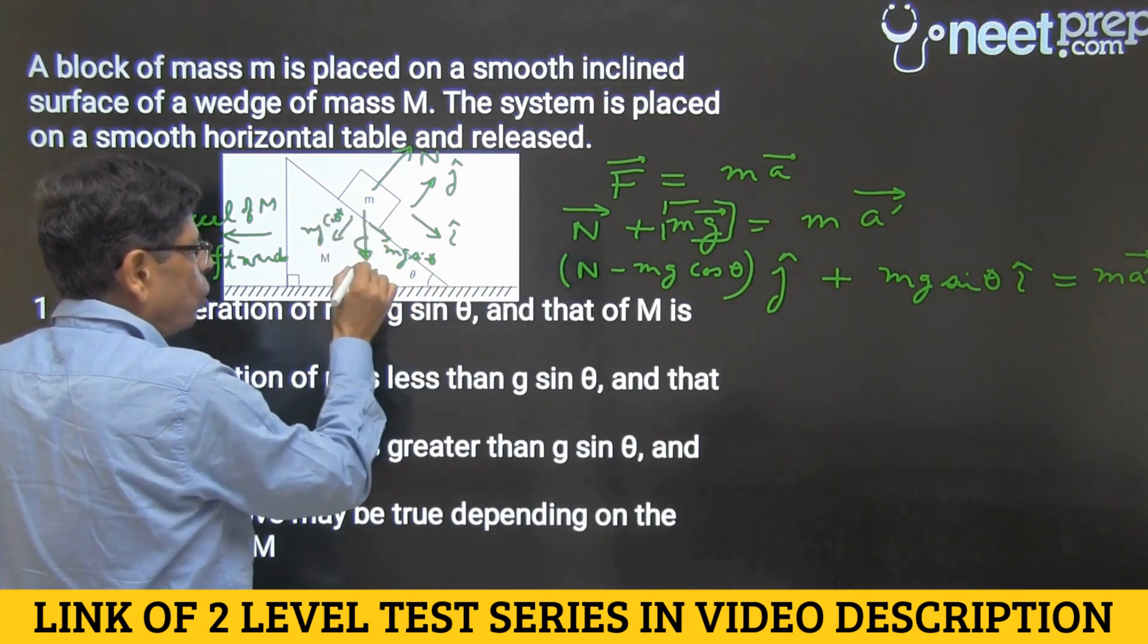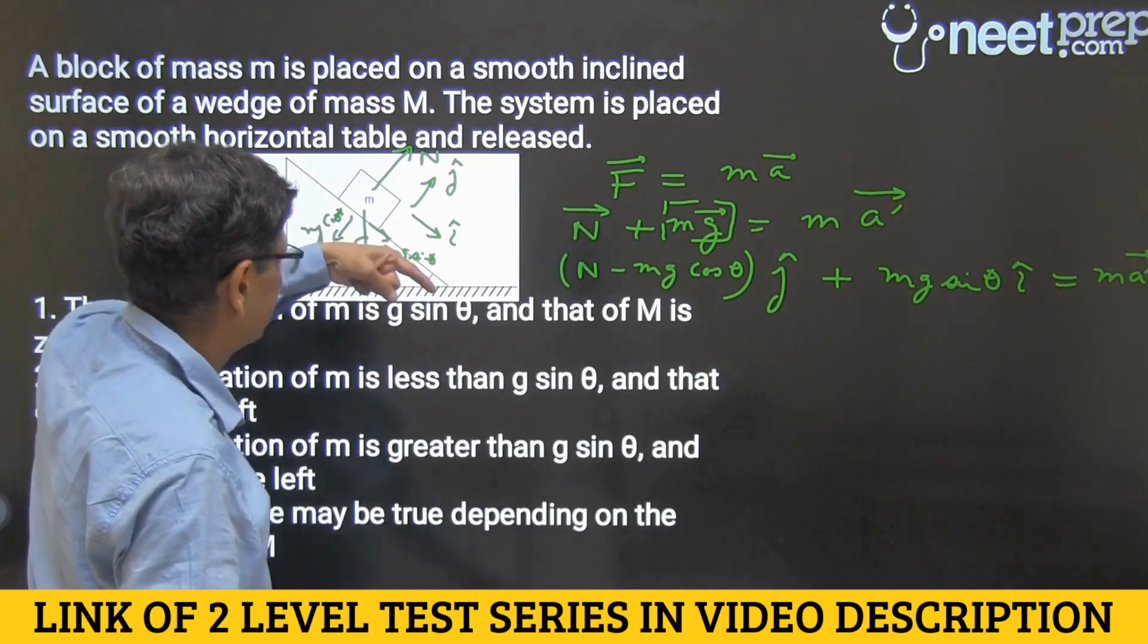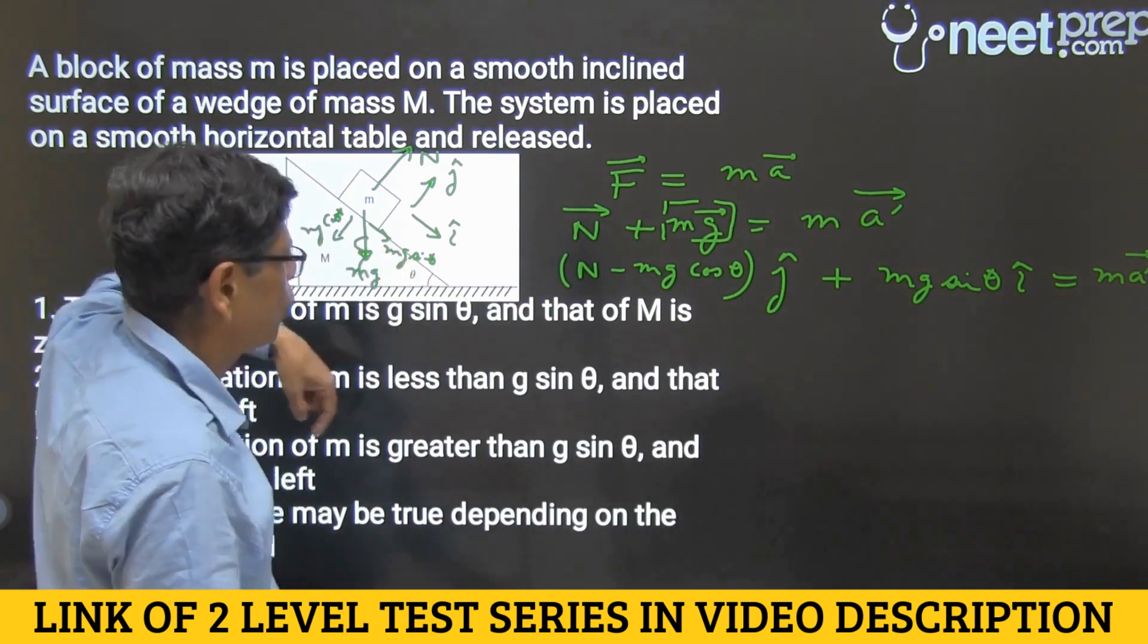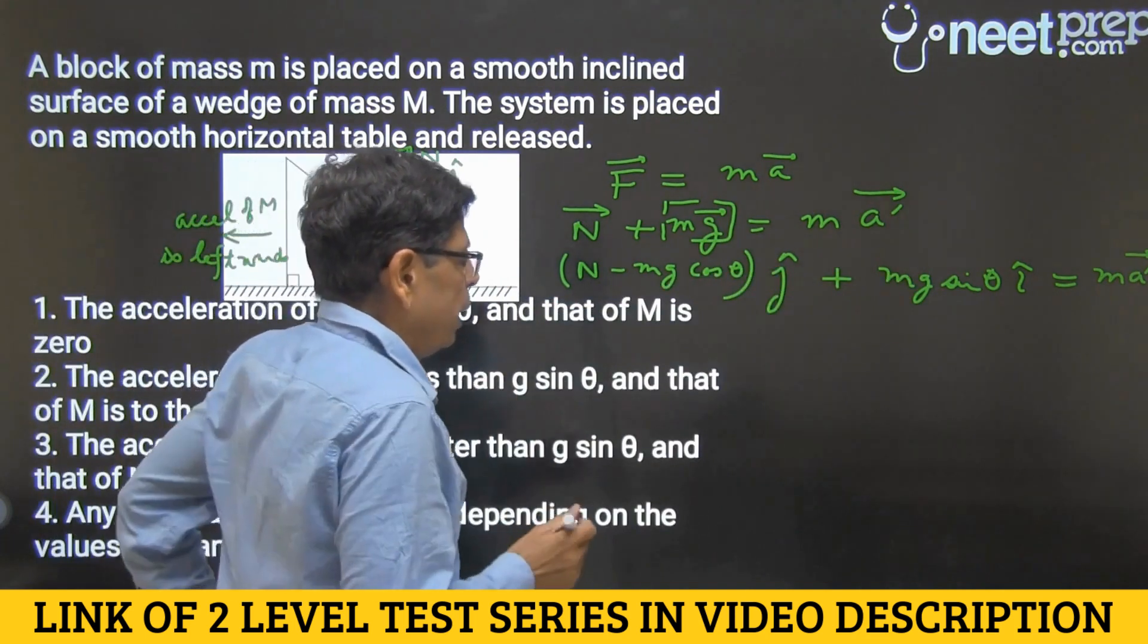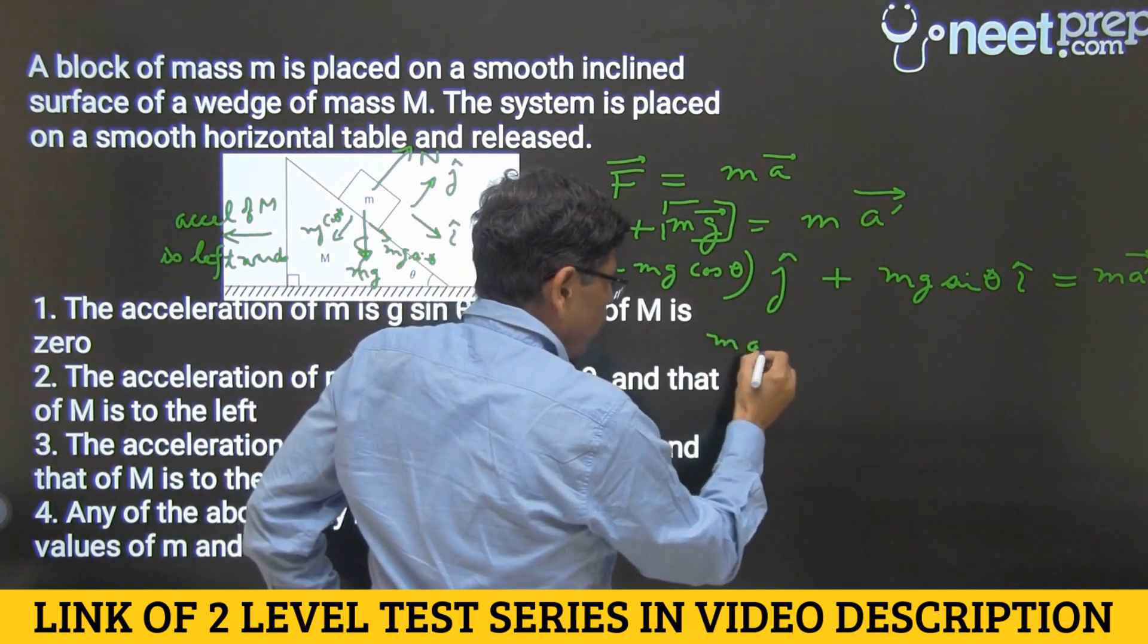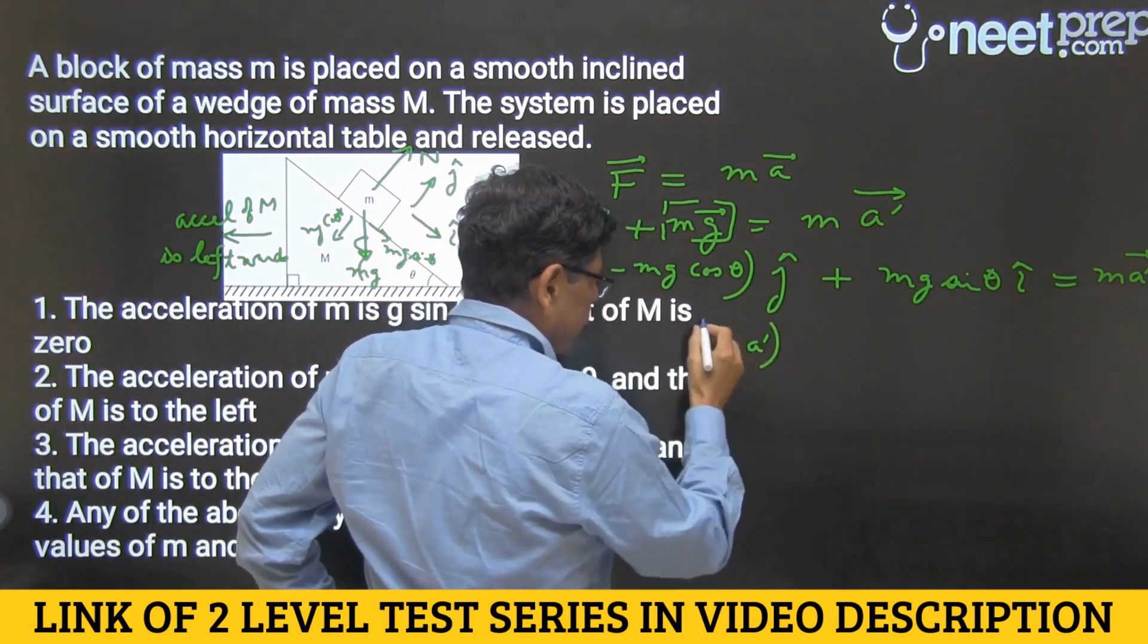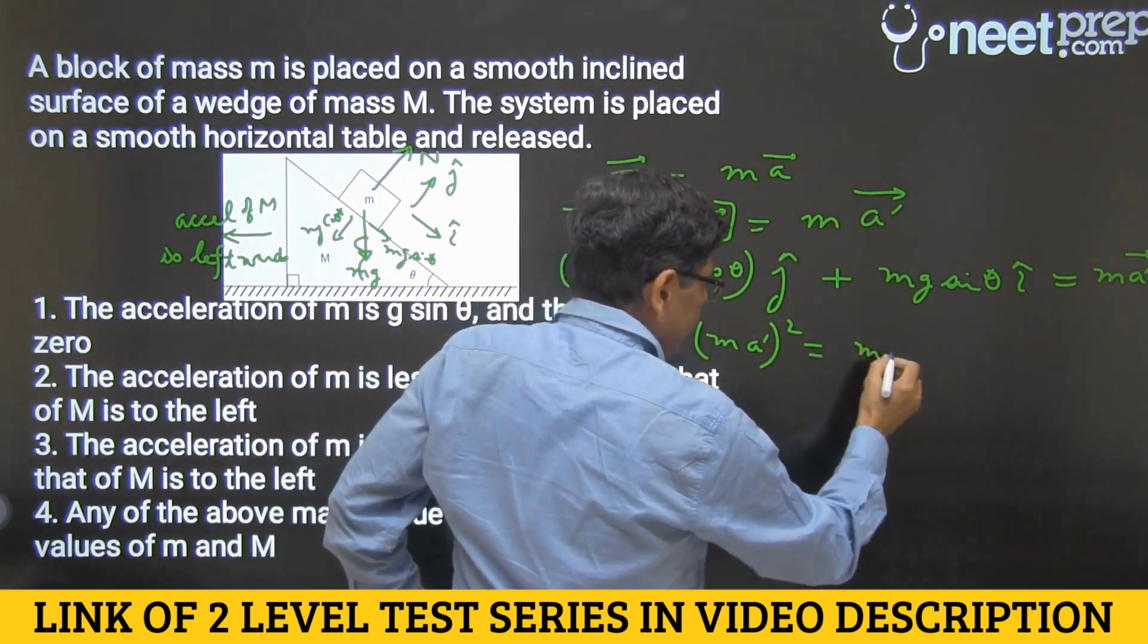So this mg is gone and it leaves two forces in its place: mg sin theta i cap and minus mg cos theta j cap. Now it is clear from this equation that m into a dash squared equals mg sin theta